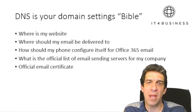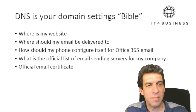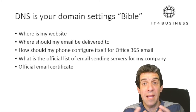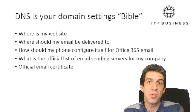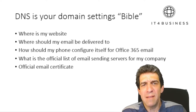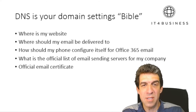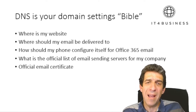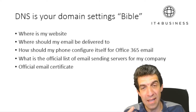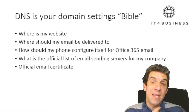So how does a mail program like Outlook, Apple Mail, or Google Mail check? Where does it look? There's a bunch of settings that belong to your domain. For itforbusinessuk.com, those settings contain things like where's my website, where does email get delivered — all of this is in my DNS settings. For example, when you configure an Office 365 account and just put in your email address and password, it figures everything out because that information is in the DNS settings. And there's another setting which is the official list of email sending servers for your company, and as mentioned, whether there's an official email certificate.